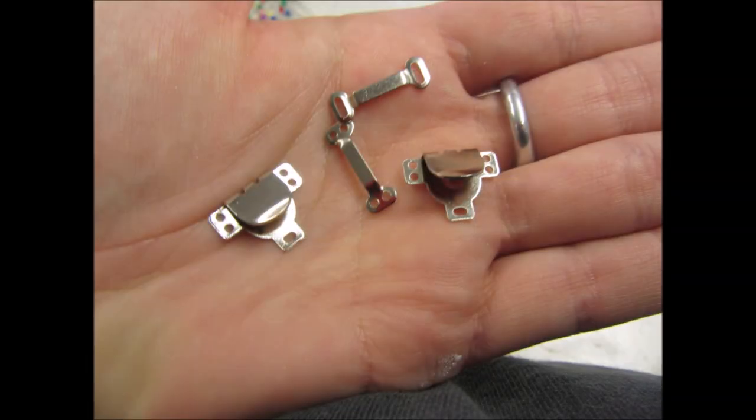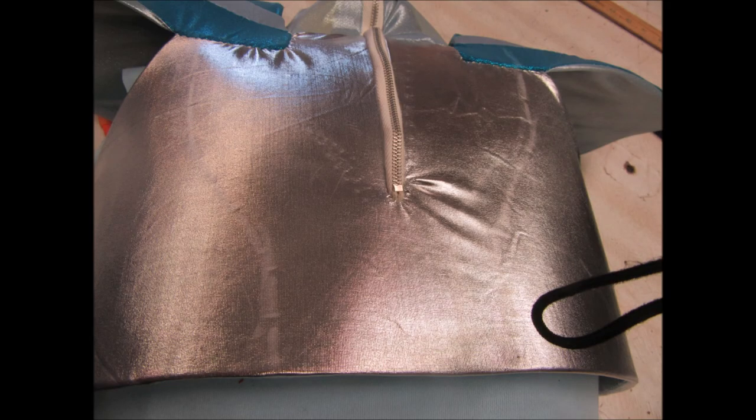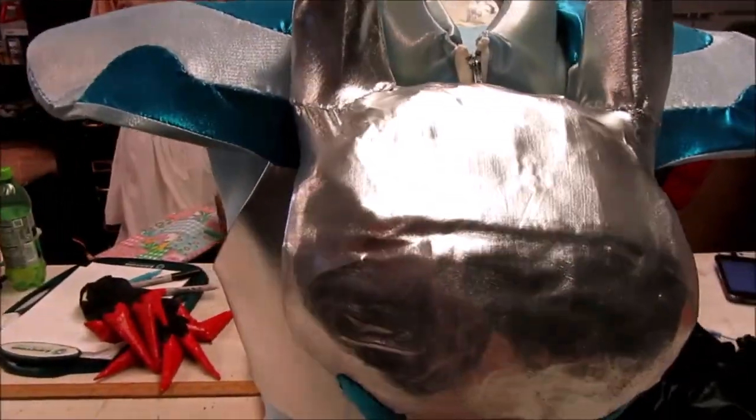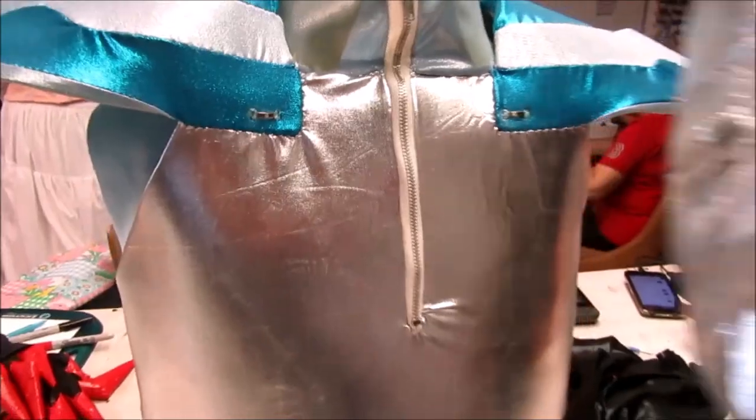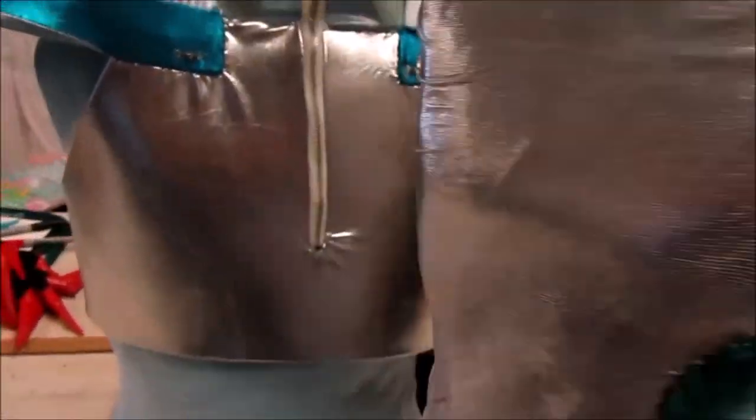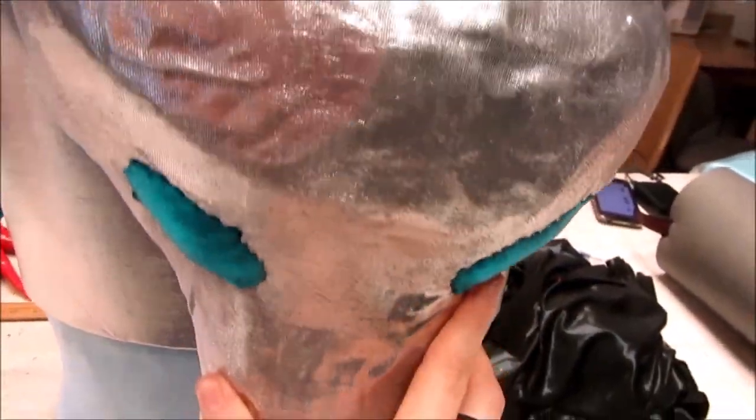Finally, to attach the head, I just used some large hook and bar closures. I sewed the bars to the chest plate and the hooks to the back of the horse's head. That way it just slides into place and hangs there. It works really well, but sadly, I can't do this myself when I'm wearing the outfit, so you'll need help getting dressed.